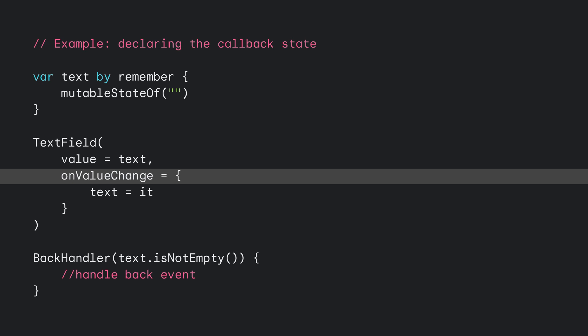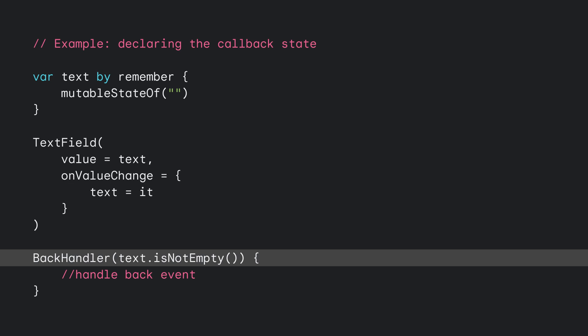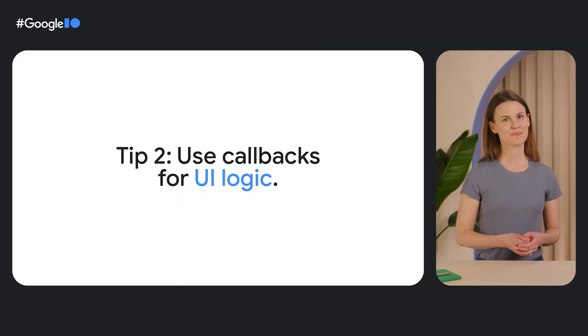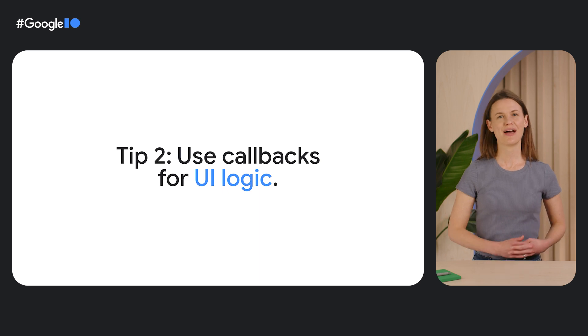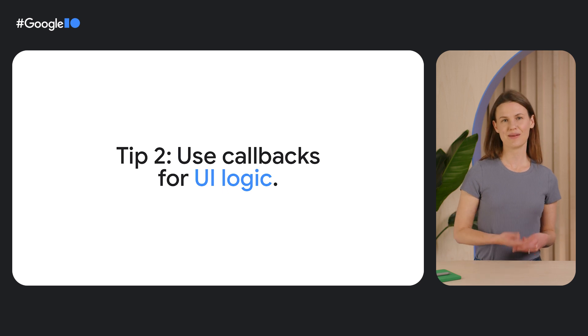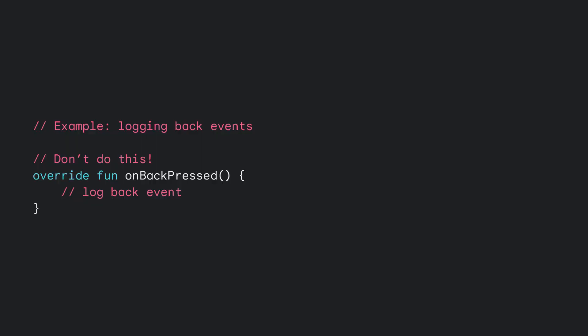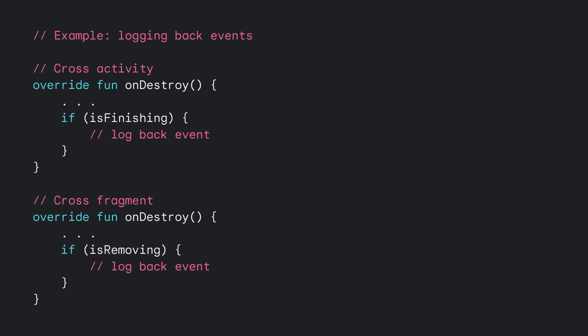First, determine the UI state that enables or disables each callback. In this Compose example, we observe the state of our text field in onValueChange, and when the text is not empty, we enable BackHandler to handle the back event. Second, use the new predictive back callbacks for UI logic that changes UI state, such as showing a dialogue or running an animation. For example, if you've been using the no longer supported onBackPressed method to log back events, moving this logic to the new callbacks disables the predictive animations and makes your code responsible for navigation. Instead, don't create callbacks for logic like this. Consider logging within the activity or fragment lifecycle instead.